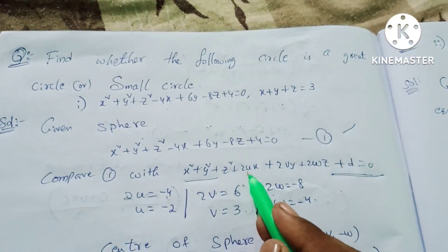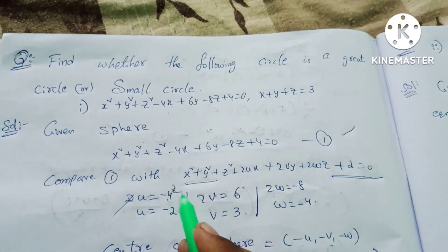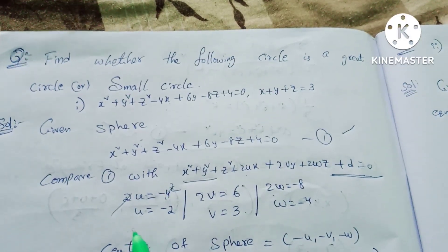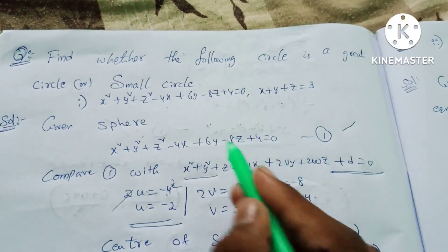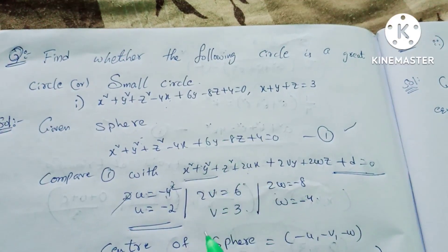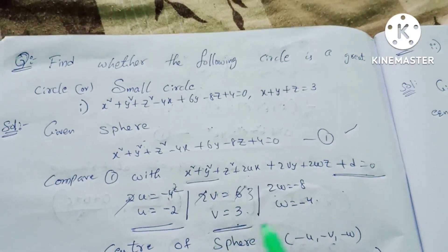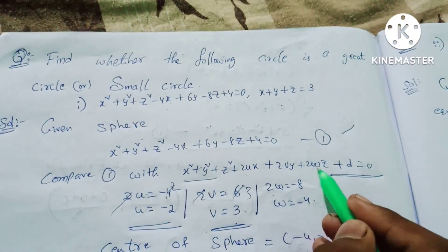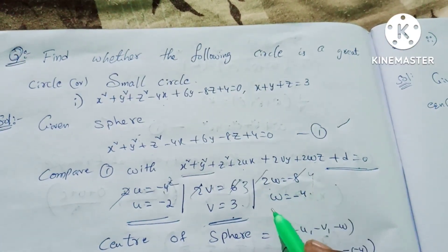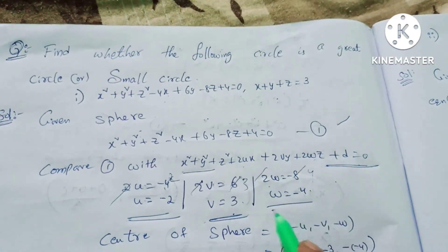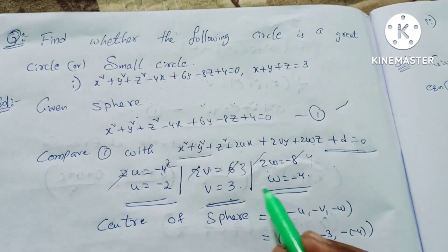Comparing coefficients: 2u = -4, so u = -2. 2v = 6, so v = 3. 2w = -8, so w = -4.